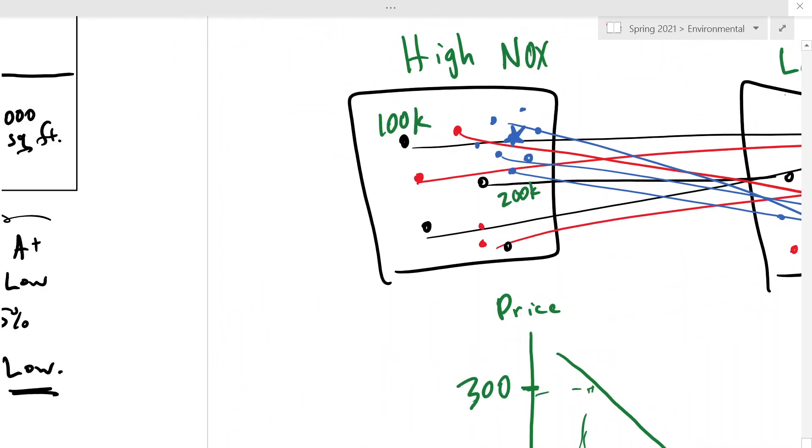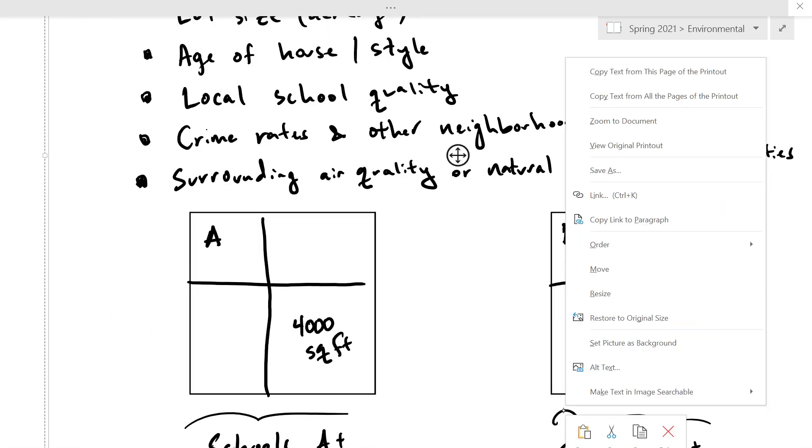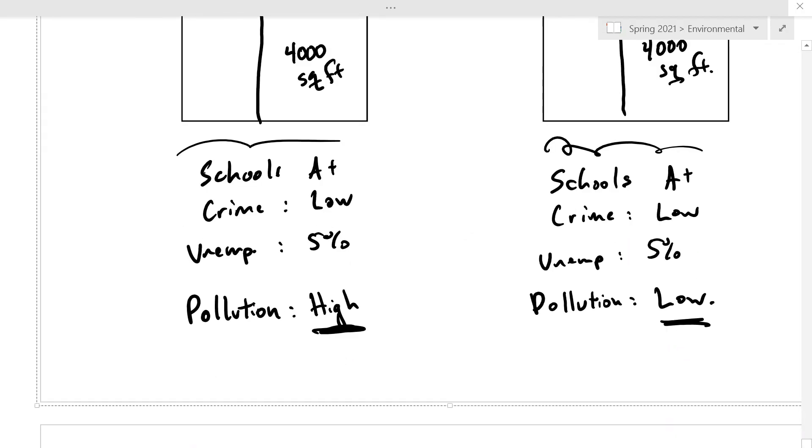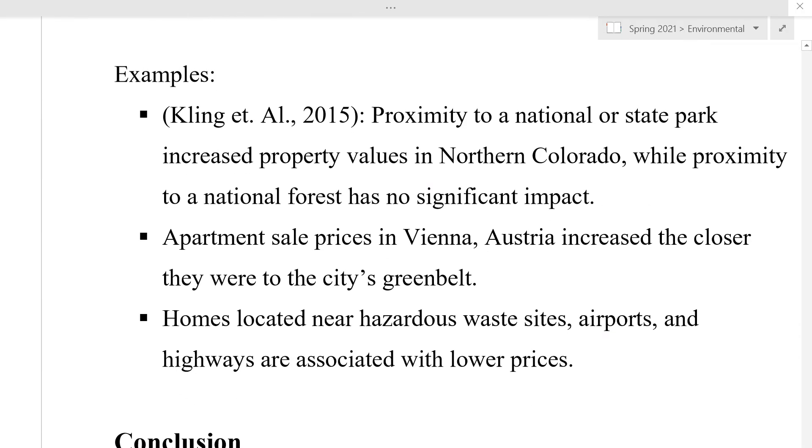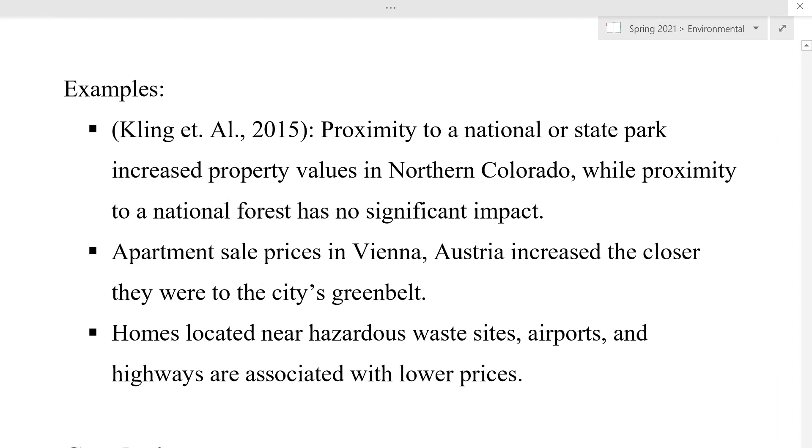And so, hedonic pricing is really nice in that sense because it gives statistically robust estimates for house prices. So, here are just a few examples. I'll just leave those for you to read. But it's common for national parks, state parks, green belts in cities, and then negative associations with hazardous waste sites, airports and highways from noise pollution, and even air pollution. So, hedonic pricing is very common in the academic literature, very common even in practical analysis and policy analysis to try to understand the value of environmental resources.